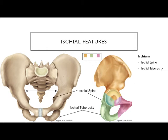The ischium also has an ischial tuberosity — the most posterior and inferior feature of this region. It's rough and bumpy, making it a tuberosity — one of our three T's of attachment. Large leg muscles attach here.